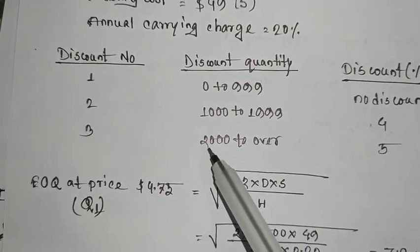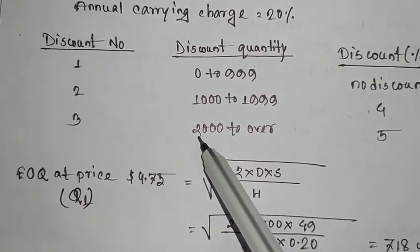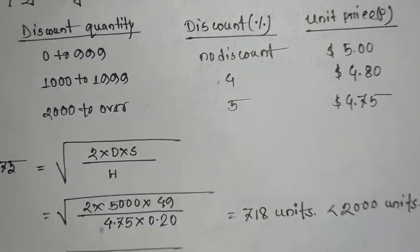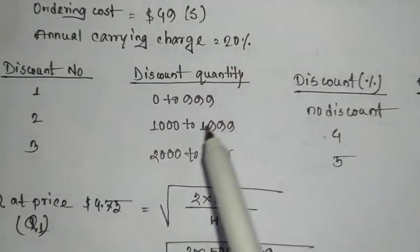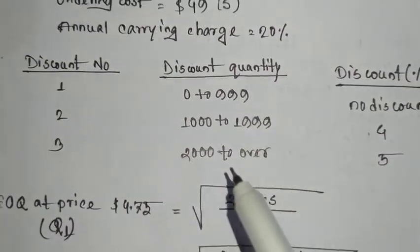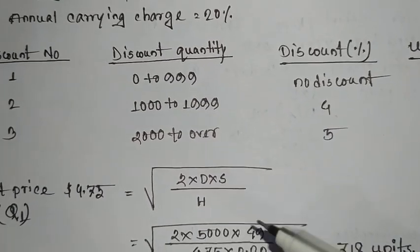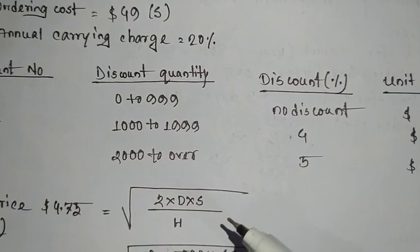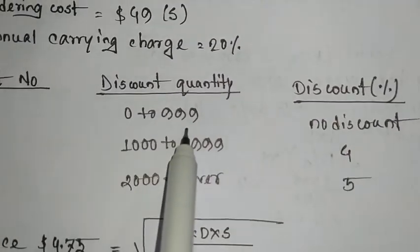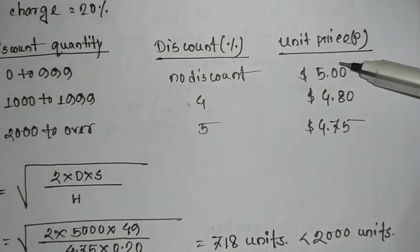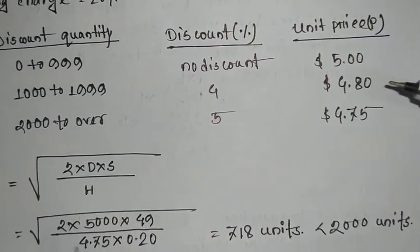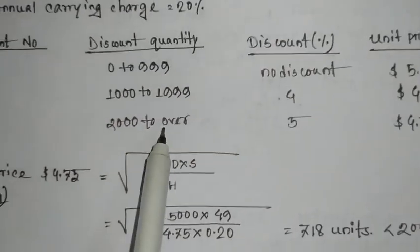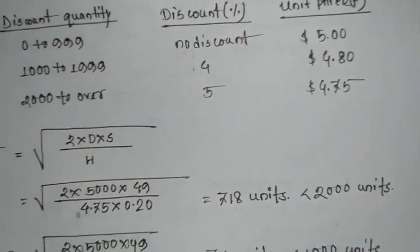The third segment involves order quantity and discount quantity of $2,000. The discount is 5%, and the unit price is $4.75. The total inventory cost is to be calculated for each scenario.